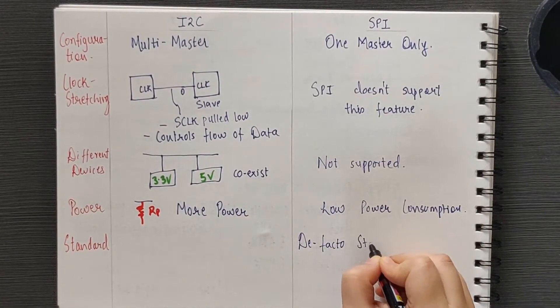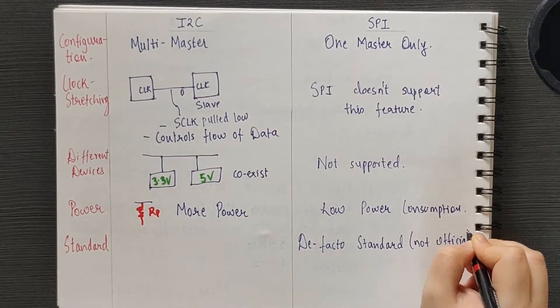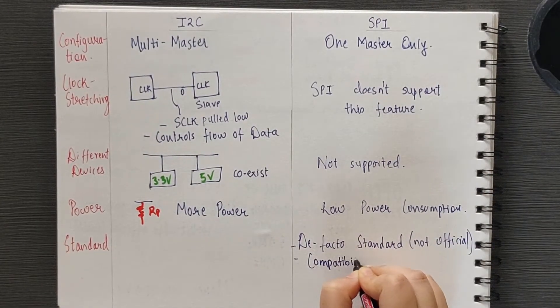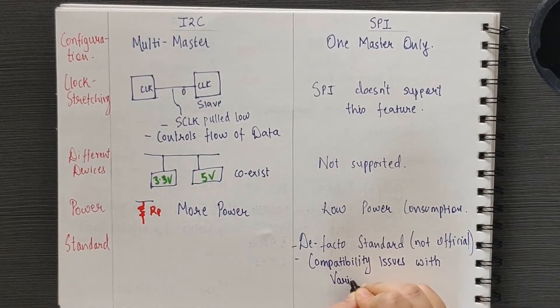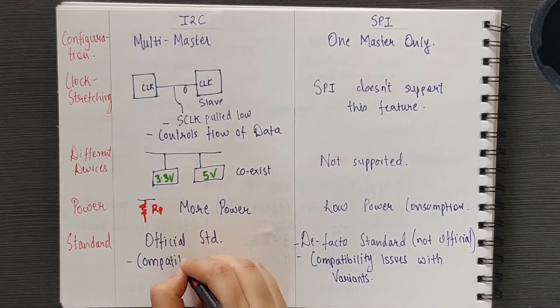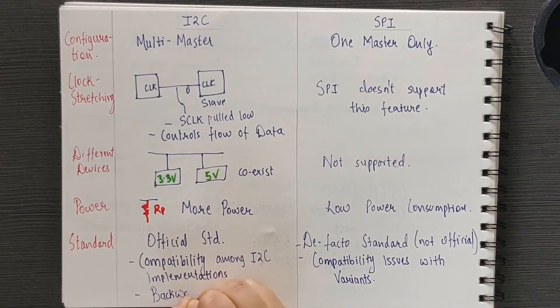Last but not the least, SPI is a de facto standard. It's not an official standard. Thus, several variants and customizations can create compatibility problems. I2C is an official standard. Thus, it provides compatibility amongst I2C implementations and backward compatibility as well.